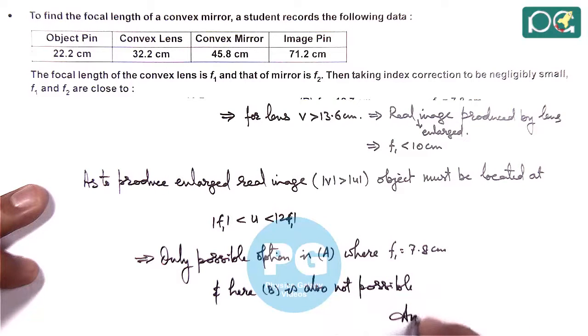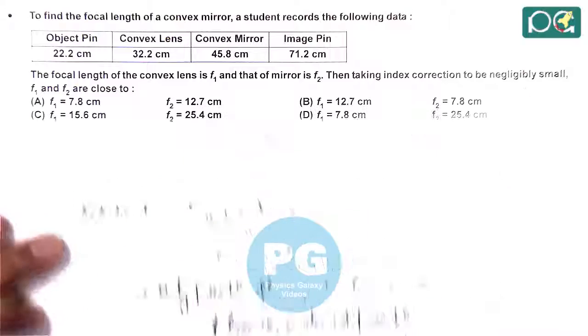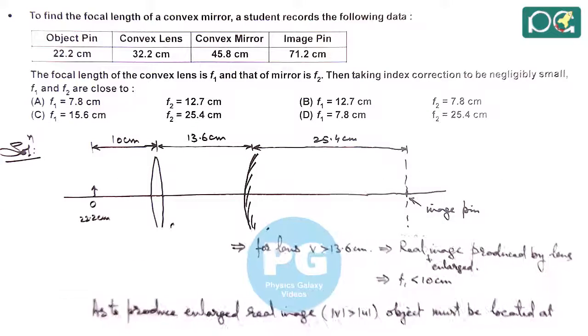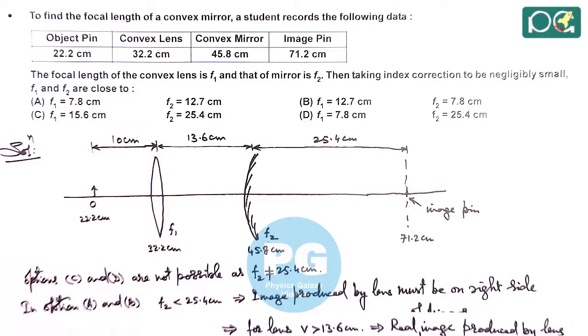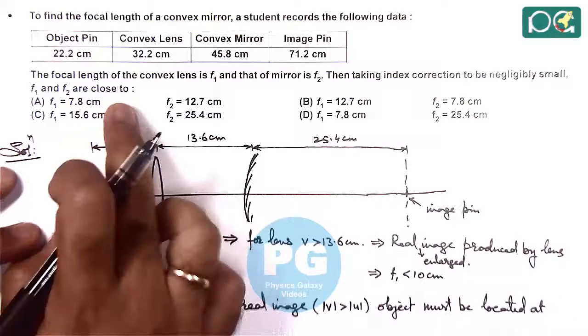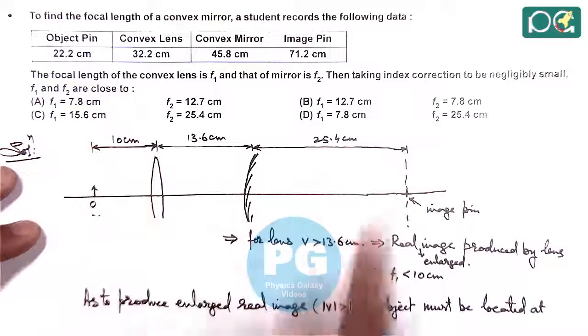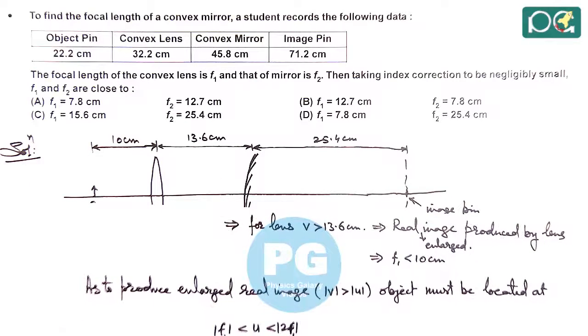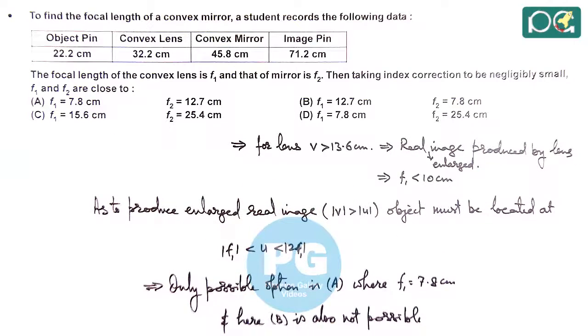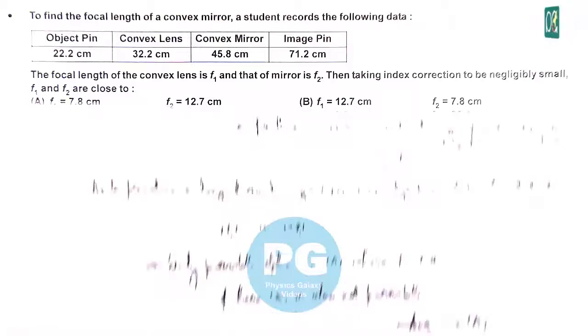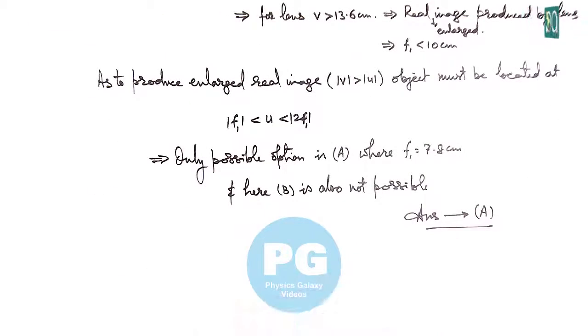So in this case answer to this question will be option A. That is the qualitative way we have analyzed, and I hope this is clear to all of you. If you mathematically analyze the question this will be quite lengthy. The values are given close values so it will be very difficult to obtain the exact relations in f1 and f2. Experimentally these are not exact values, so answer obtained is option A.